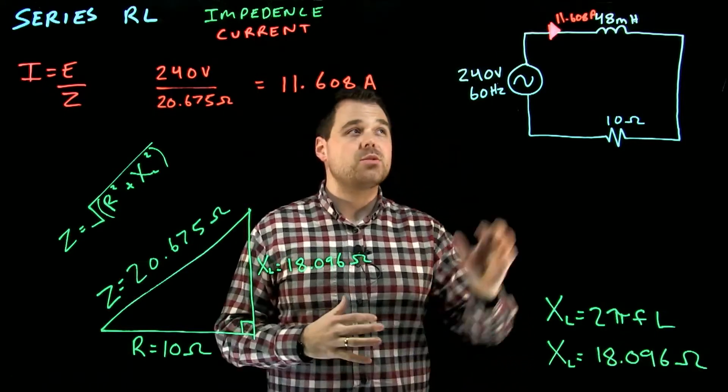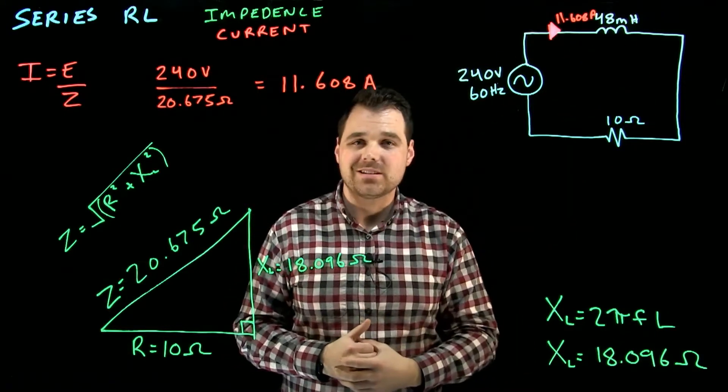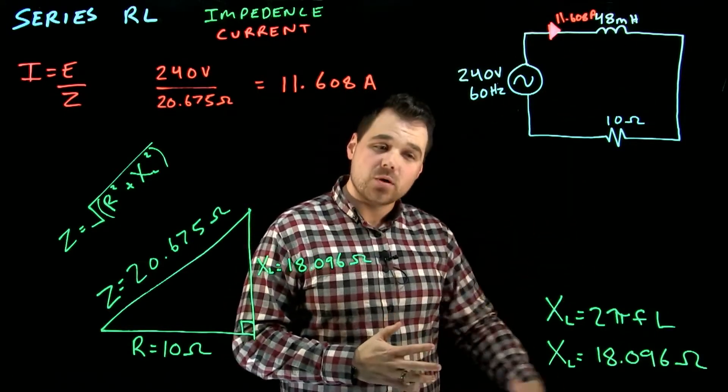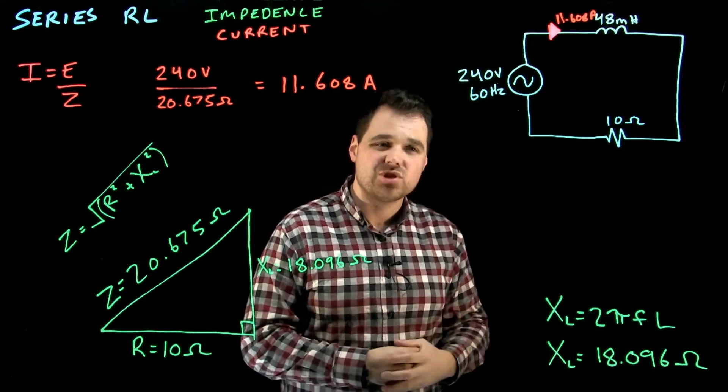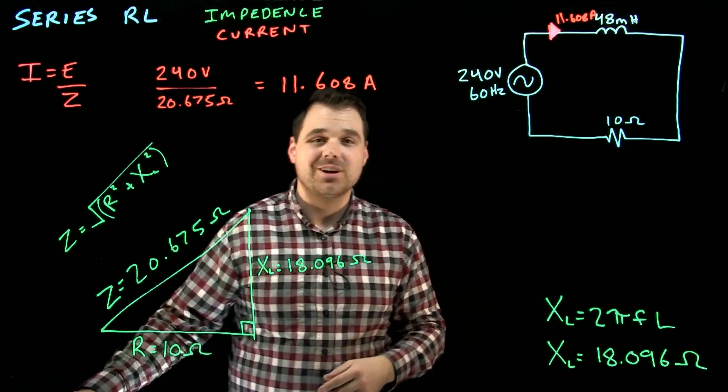So in this circuit now we've solved for our circuit impedance and for our total current. In the next video we're going to talk about the certain volt drops that are going to apply to this circuit. And in the third video we are going to talk about the power relationships in this circuit. Thanks for watching. I hope it's helped.